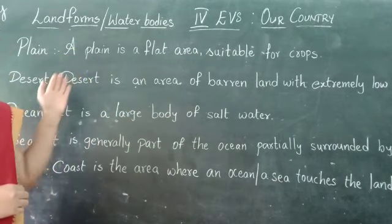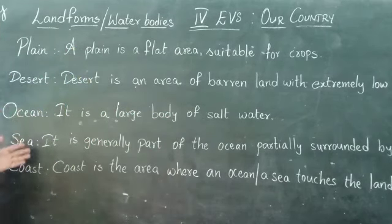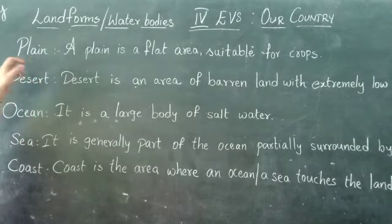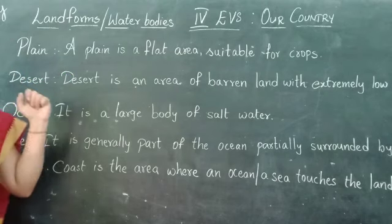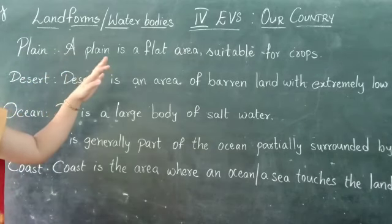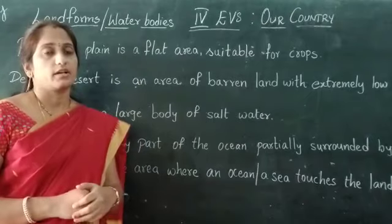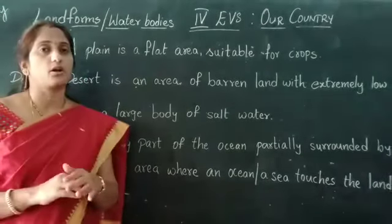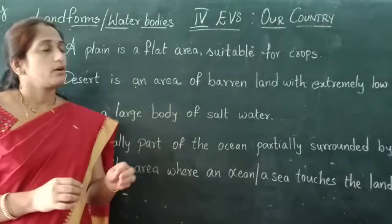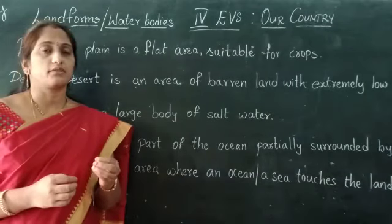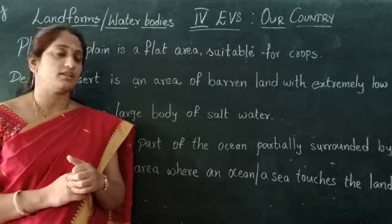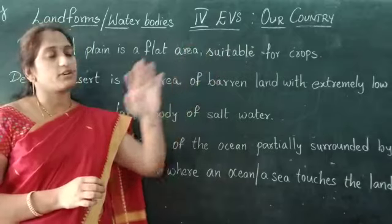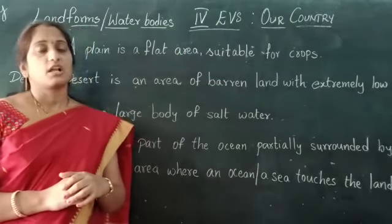Here I have given five types of landforms or water bodies. The first one is plain. What is a plain? A plain is a flat area suitable for crops. There are no ups and downs, and very fertile soil is present in the plain. The soil is very fertile and it is suitable for crops.